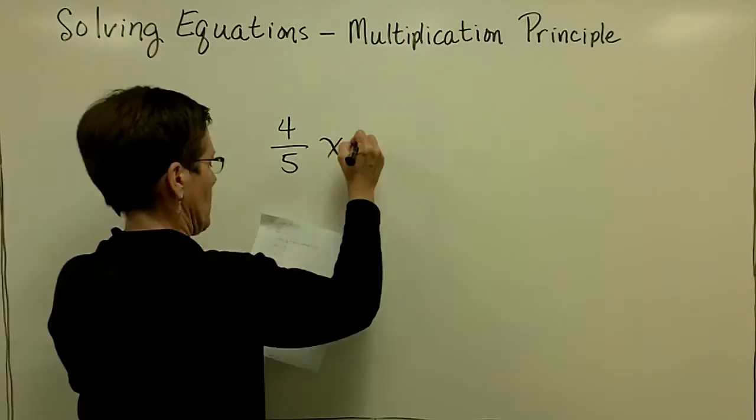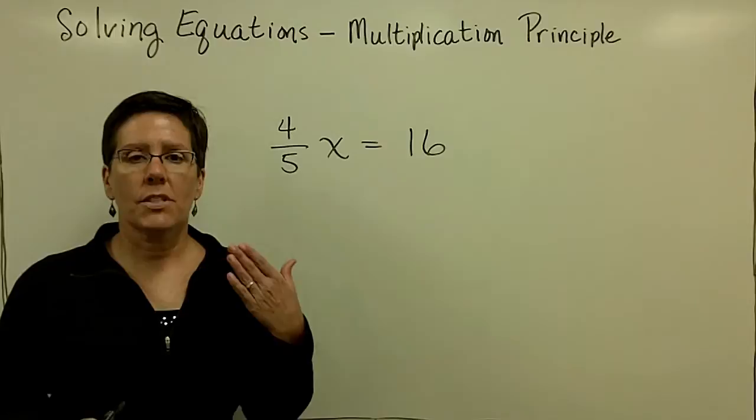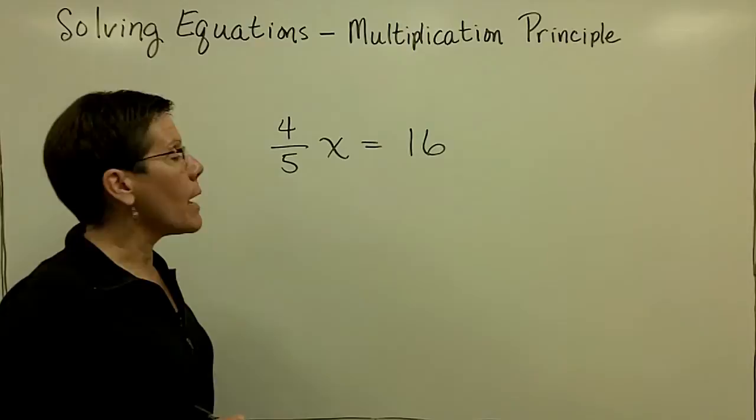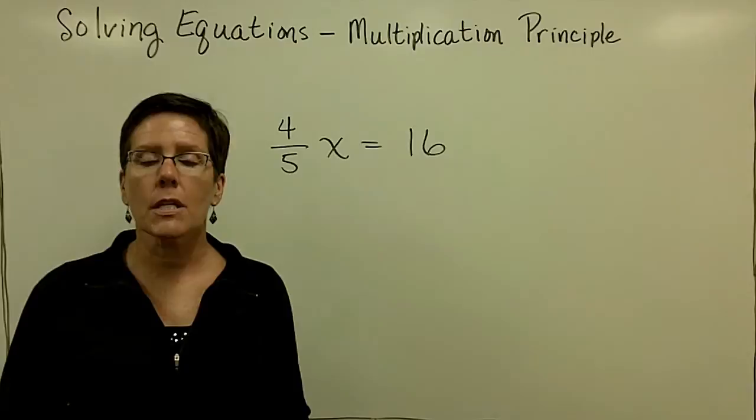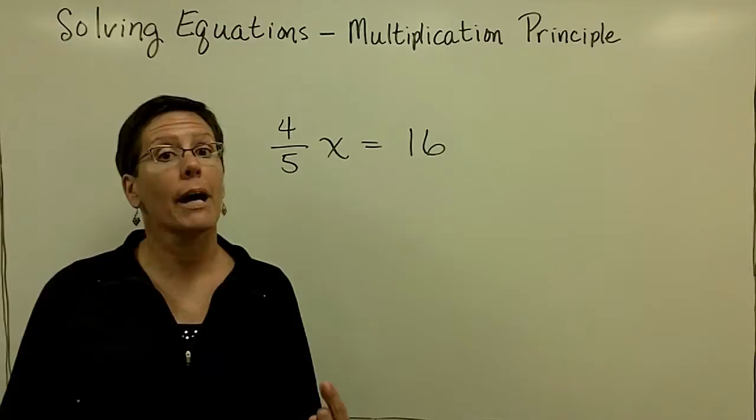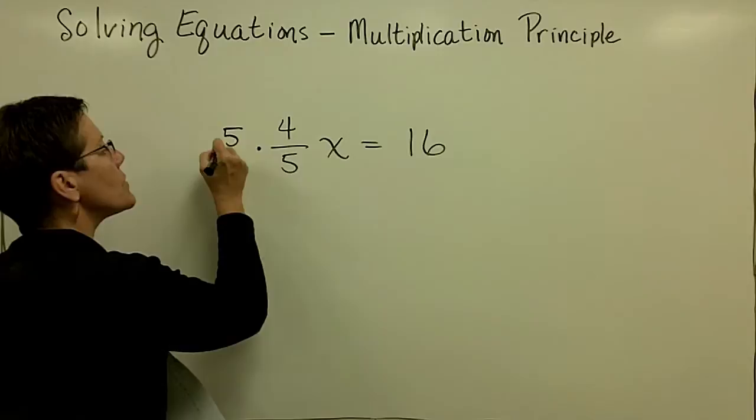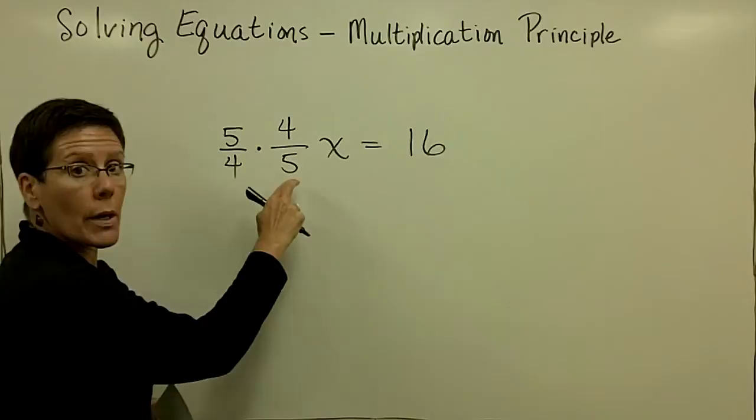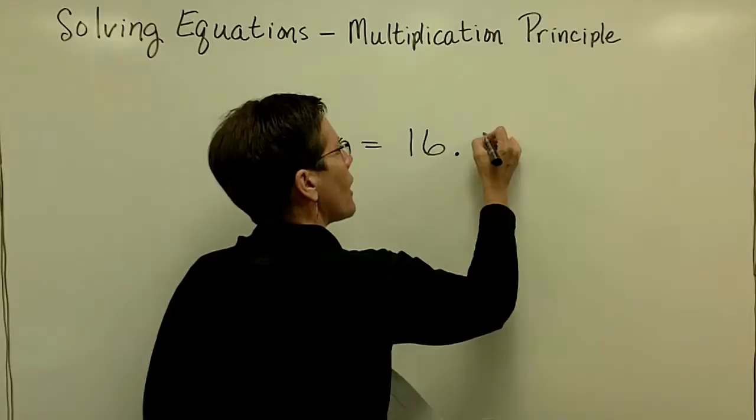Let's do one with fractions. I have been saying to you in the last couple of problems to divide both sides by whatever the coefficient of x is. The coefficient of x in this problem is 4 fifths. So I could say let's divide both sides by 4 fifths. But it would be much easier if I instead said let's multiply both sides by 5 fourths — the reciprocal — because that would be 20 over 20, or 1 in front of the x.